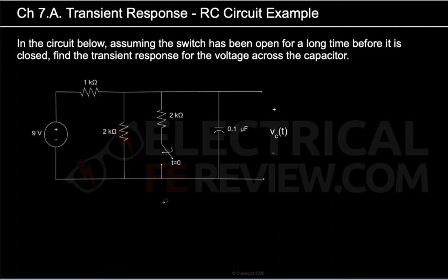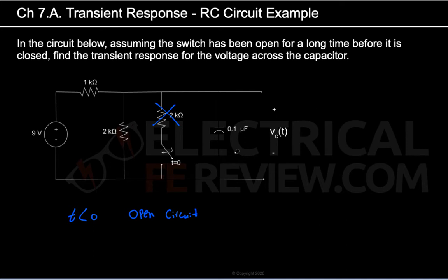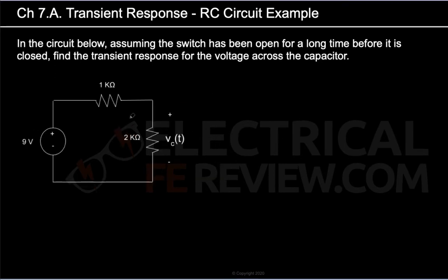To find the transient response, we consider the circuit at three different times: before the switch is closed (T < 0), after the switch closes (T > 0), and at T = ∞. Let's start with T < 0 — when the switch is open. Assuming the switch has been open for a very long time, the capacitor acts as an open circuit. We can replace the capacitor with an open circuit and remove the 2kΩ resistor since those wires are not connected.